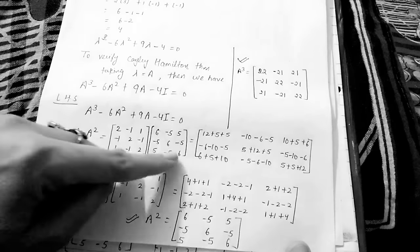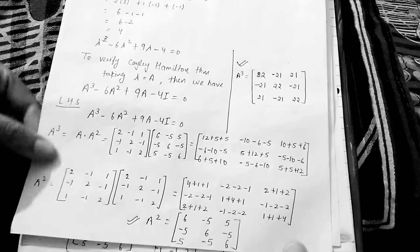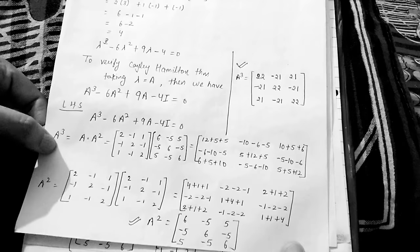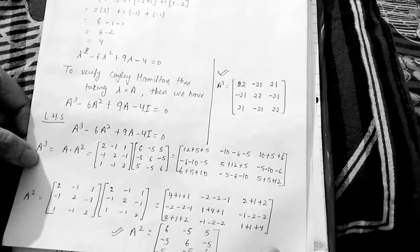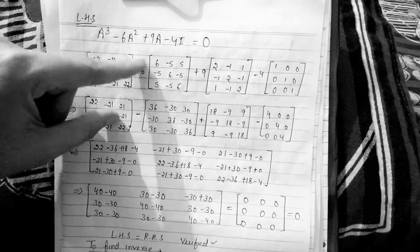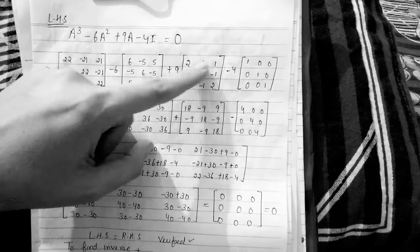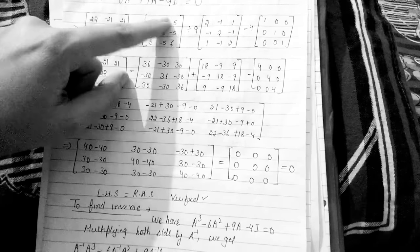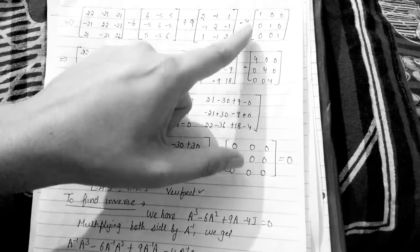Then, using A and A², I find A³ = A × A². I hope you know how to multiply two matrices — if you have doubt, write in the comment section and I'll explain in the next video. Now I put all values into the equation: A³ minus 6 times A² plus 9 times A minus 4 times I. We multiply 6 by A² and 9 by A, and then simplify each element of the resulting matrix.